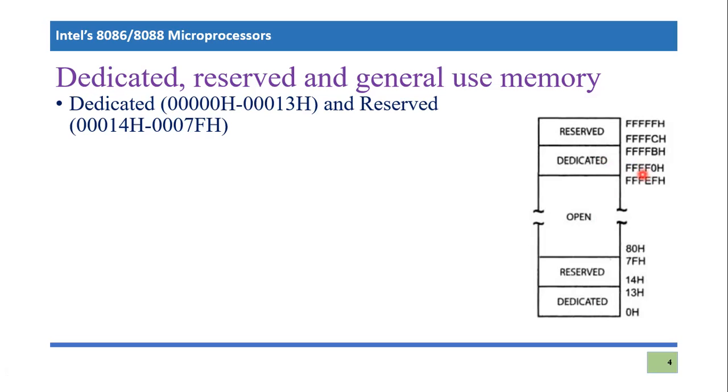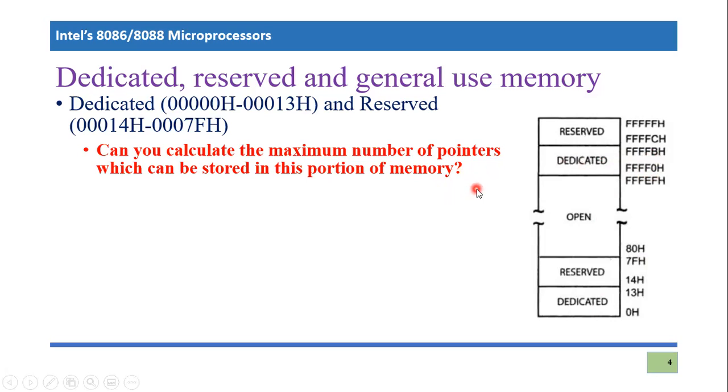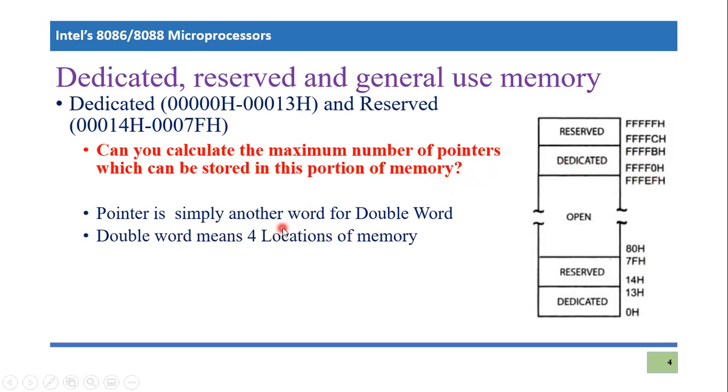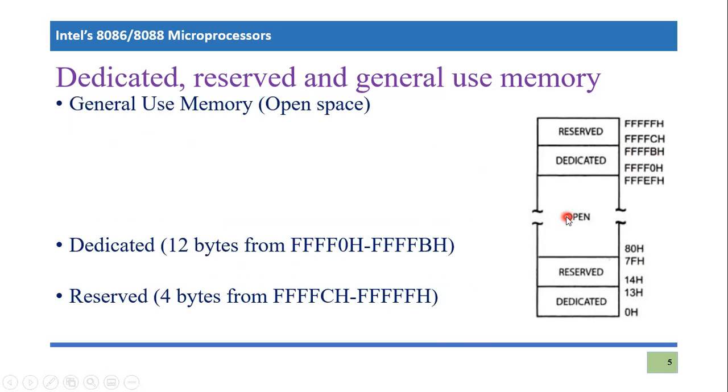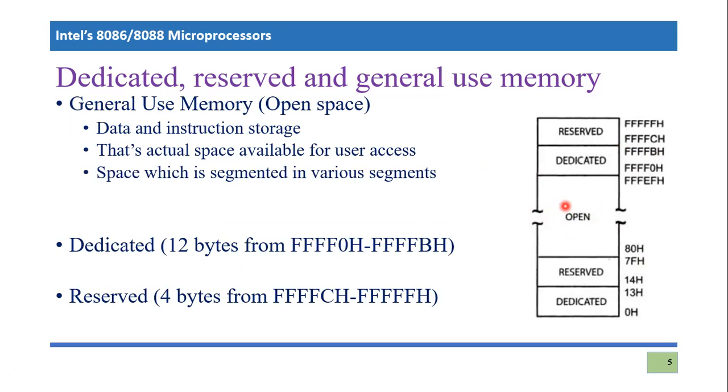What is a dedicated portion? It starts from FFFF0H and it goes to FFFFFBH. General space, general use memory. General use memory means we can actually use it for anything. Whatever the program we're going to write, we're going to make code segment, we're going to make stack segment, we're going to make a data segment. So all those segments will be available only in a space. So you need to know that you need to understand that this is the actual space which is available for the user. And this is the open space.